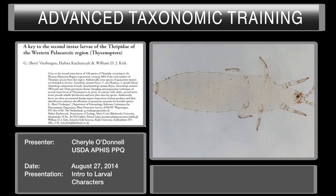That key is called the key to the second instar larvae of the Thripidae of the Western Palearctic region. While this does not comprise all thrips larvae, it does comprise a lot of specimens that you would run into in interceptions across the world, mostly in the Palearctic region. But it is helpful to understand the characters that are outlined in this key.